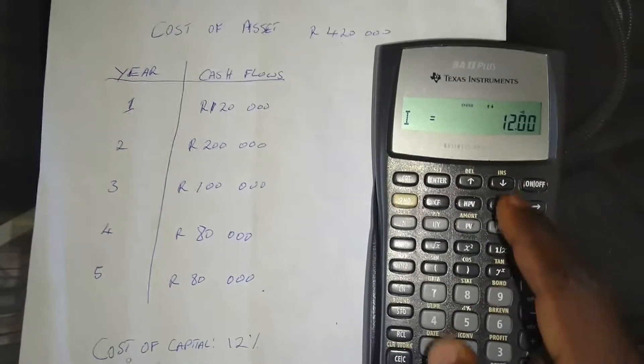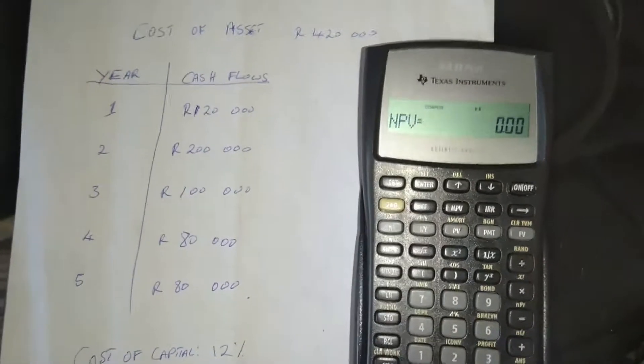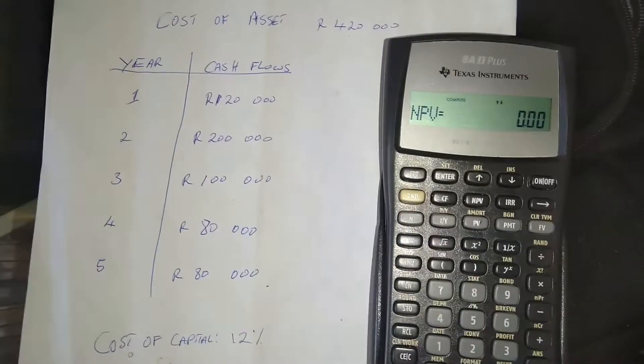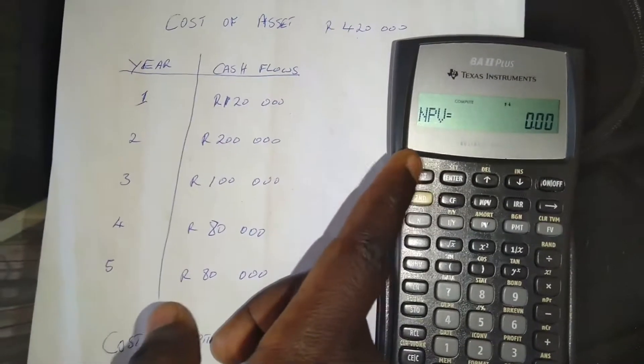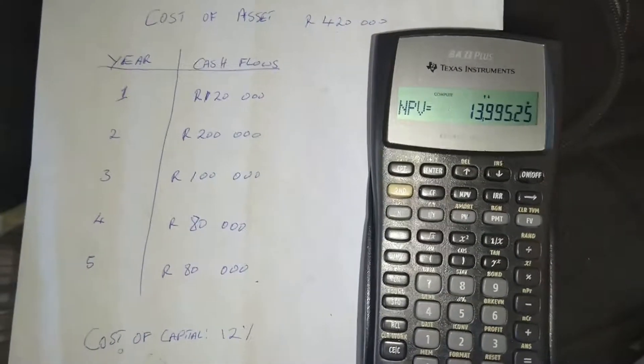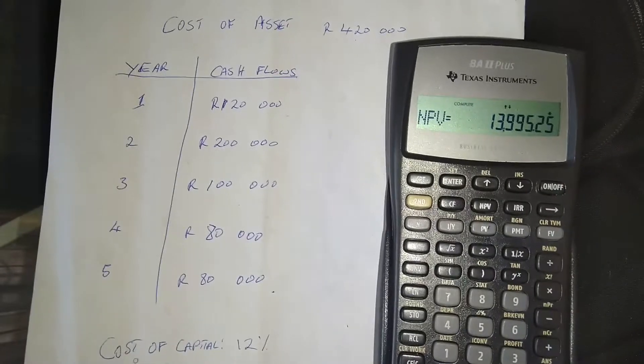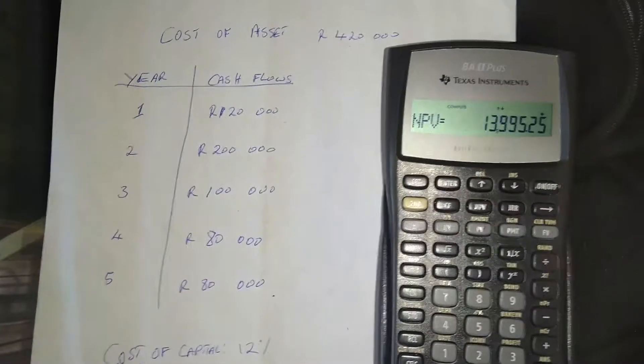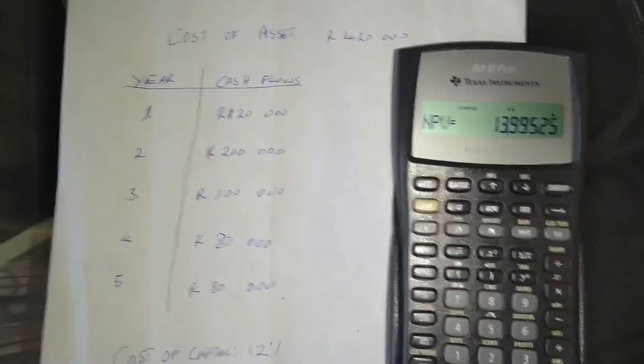And then we press the down arrow and you can see that it's written NPV. So we have to compute for NPV. So we press here, compute where it's written CPT. So if you press compute, it's going to compute the NPV for you. And you can see that the NPV is 13,995 rand and it's a positive.